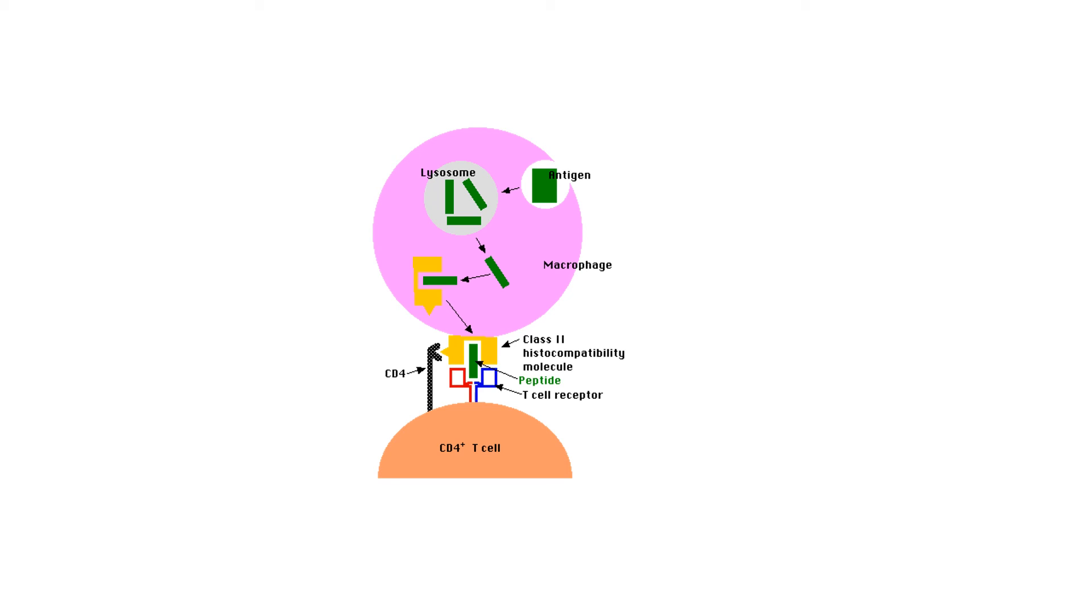Once it's activated, it'll divide by mitosis to produce clones. Some of the clones will become memory T cells and stay behind in case the same antigen is encountered again in the future.